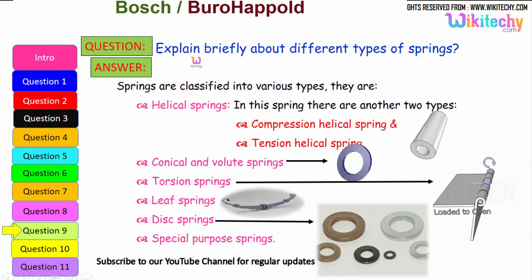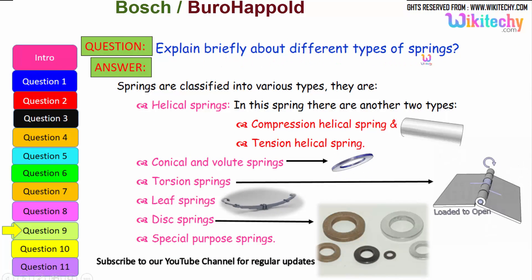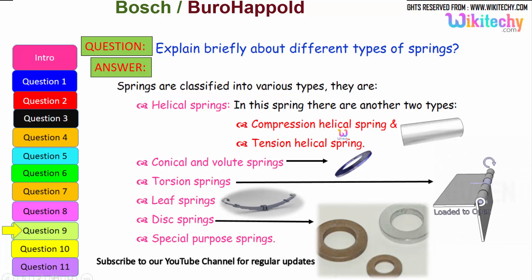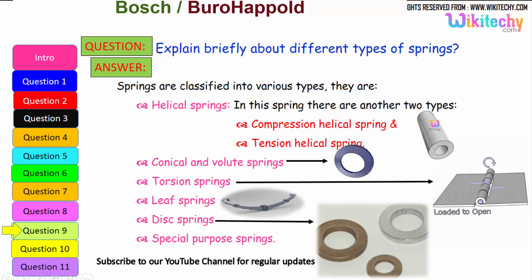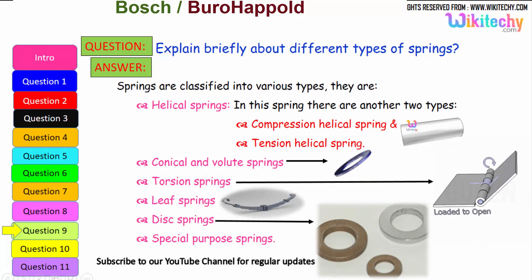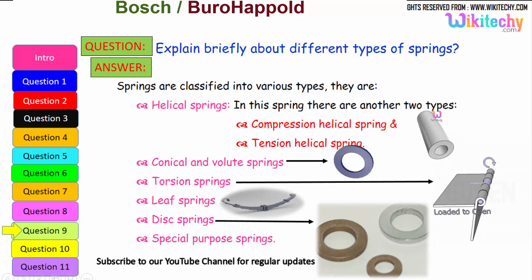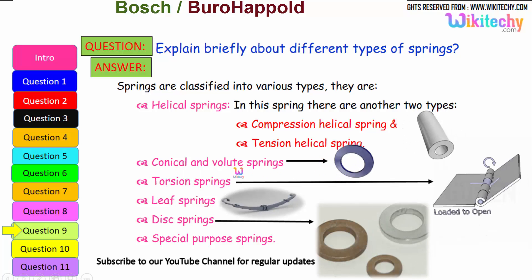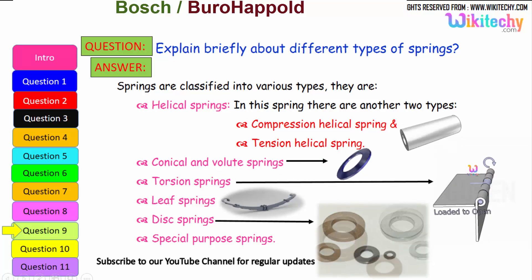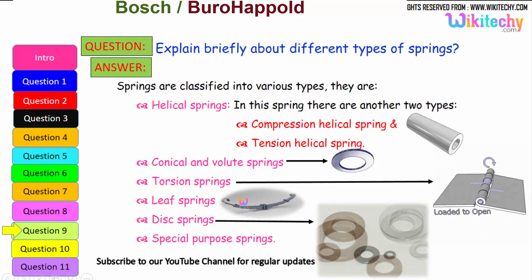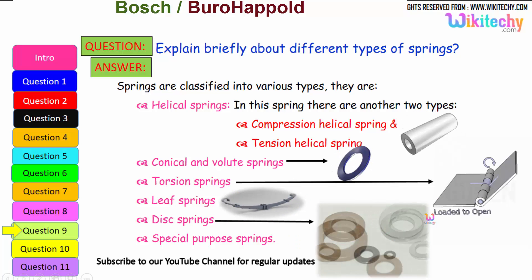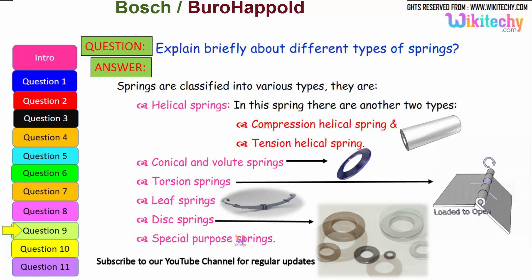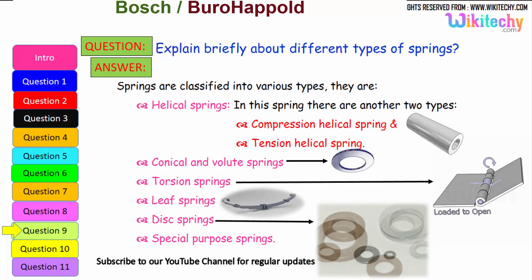Now let us see briefly the different types of springs. Springs are classified into various types: the first is helical springs, which have two subtypes — compression helical springs and tension helical springs. Next are conical volume springs, torsion springs, leaf springs, and disk springs. Additionally, there are special-purpose springs. These are all the different types of springs available.